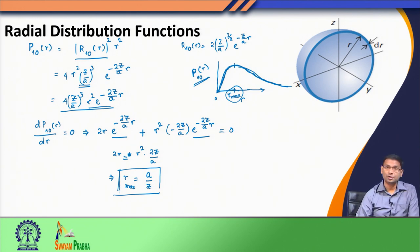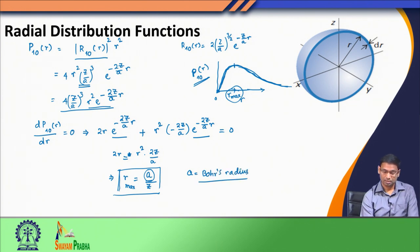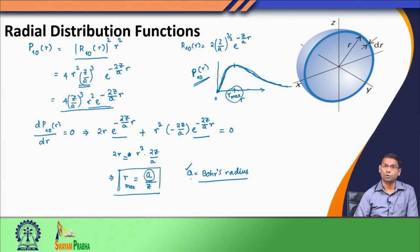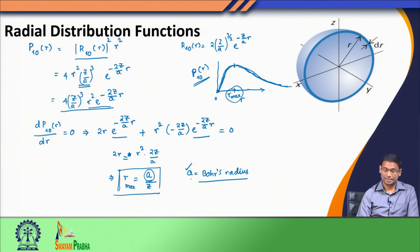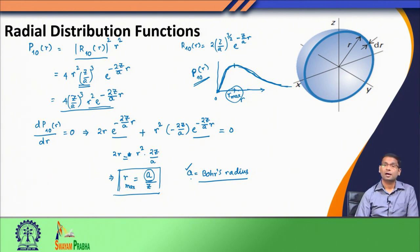For the hydrogen atom where Z is 1, r_max is simply a, which is nothing but the Bohr radius. Something interesting to note is that the quantum mechanical formulation of the hydrogen atom shows the maximum probability density for the 1s electron to be found at a, the Bohr radius — that is, when the distance between the electron and nucleus is 0.529 angstroms, that is where you would see maximum probability for the electron to be found.